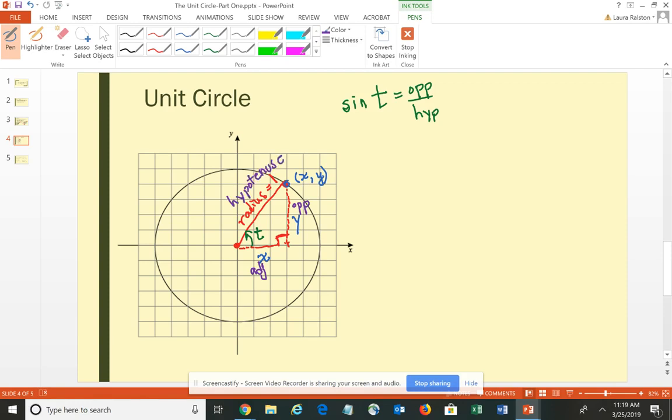So if I plug those values in, I have y, which is the opposite side over hypotenuse of 1. So the sine of T corresponds to the y-coordinate of the ordered pair. So now we can look at it as an angle and end up with a real numeric value.